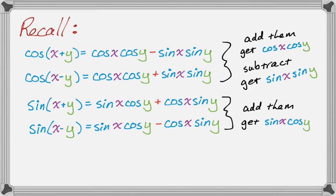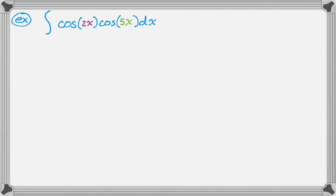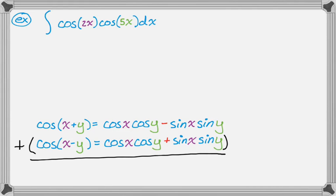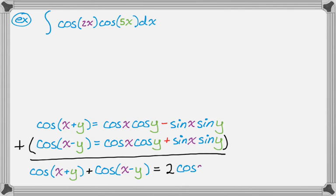Let's do an example of each. First: the integral of cosine 2x times cosine 5x dx. Since this is cosine times cosine, I need the formulas for cosine of x plus y and cosine of x minus y. If I add them together, cosine of x plus y plus cosine of x minus y equals 2 cosine x cosine y — the sine terms cancel.